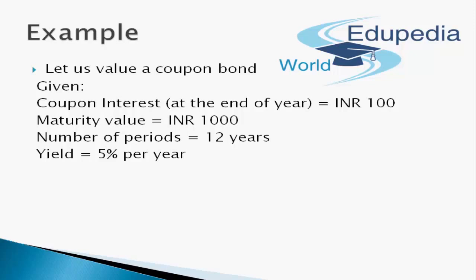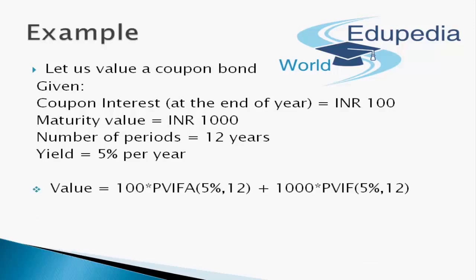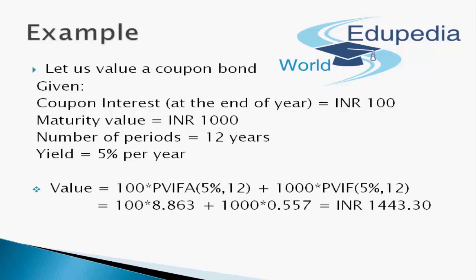Let us value a coupon bond given: coupon interest at end of year INR 100, maturity value INR 1000, number of periods 12 years, and yield equal to 5% per year. The value would be: 100 multiplied by PVIFA(5%, 12 years) plus 1000 multiplied by PVIF(5%, 12 years). The solution is 100 into 8.863 plus 1000 into 0.557, which amounts to INR 1,443.30.